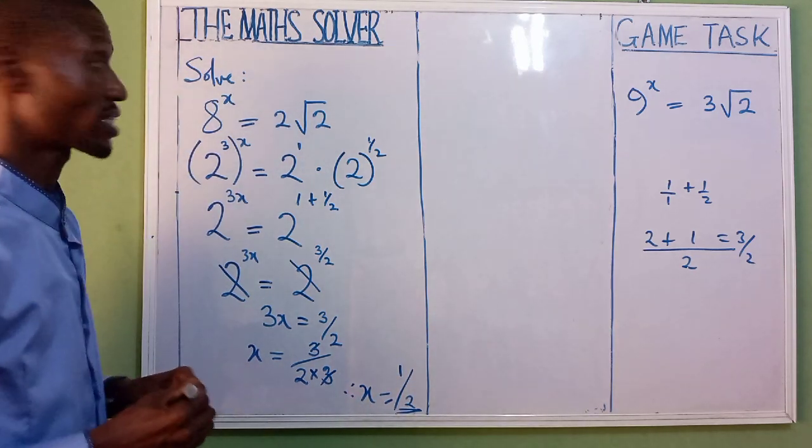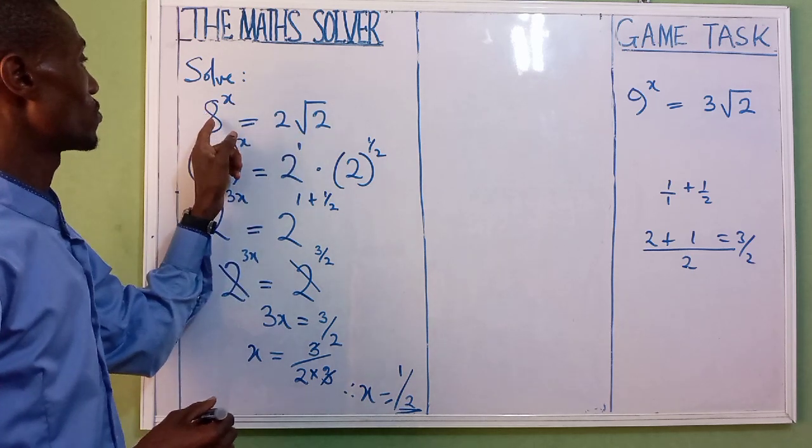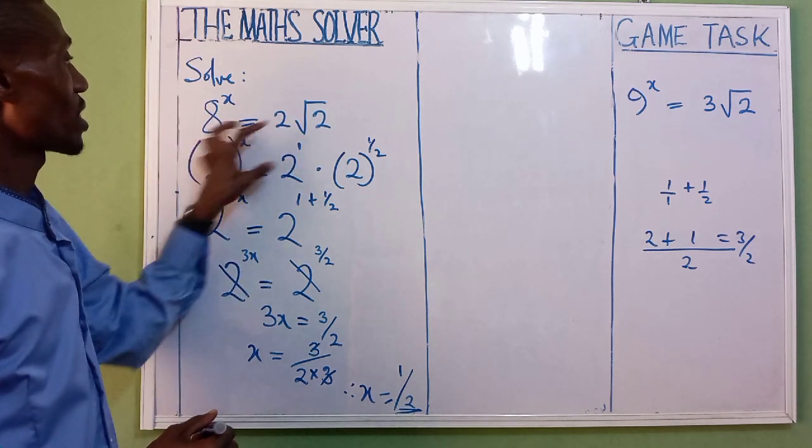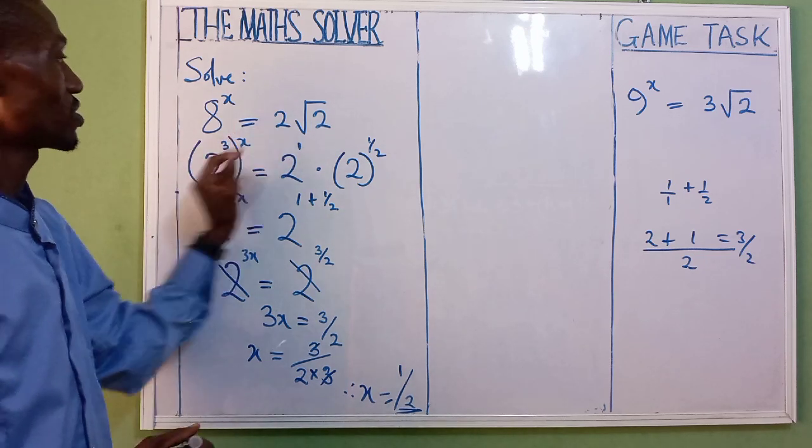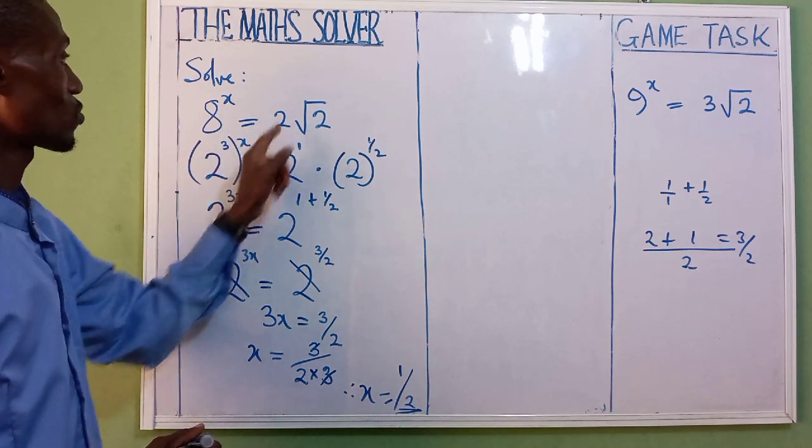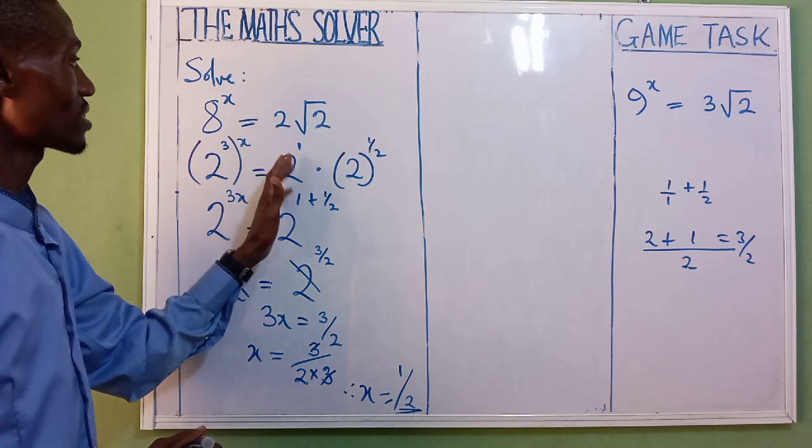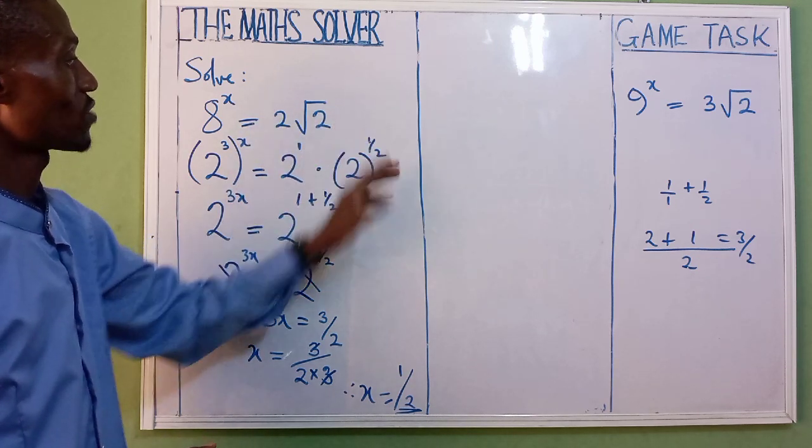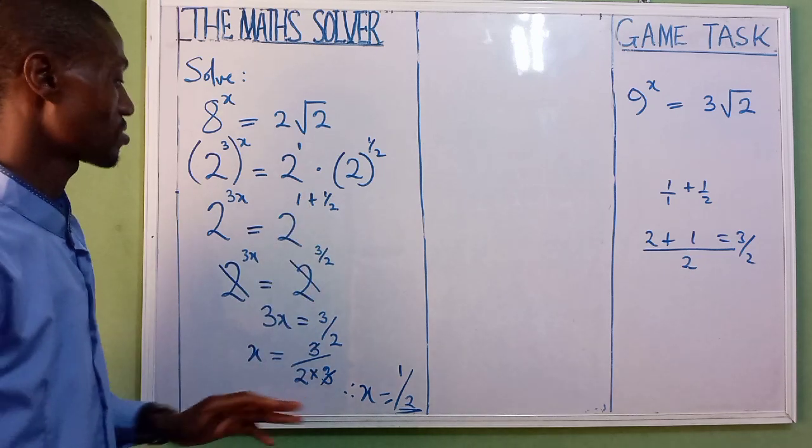Very simple. Look at where we started from. You go to the base that you're going to use here. That's base 2, so that we can have the same base. Open the bracket. 3x equal to 2 raised power of 1 plus 2 raised power of root means 1 over 2. Then you solve it. It's as simple as that.